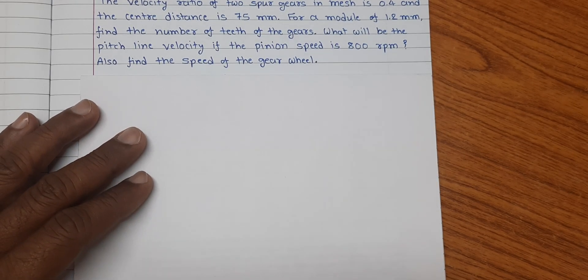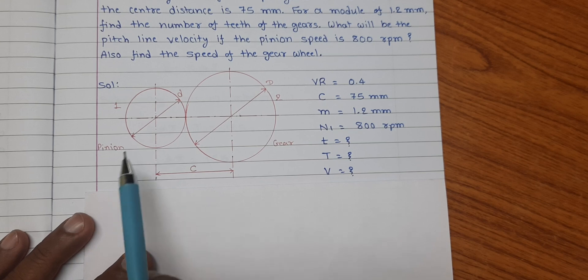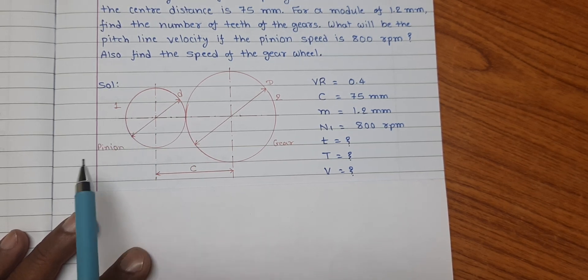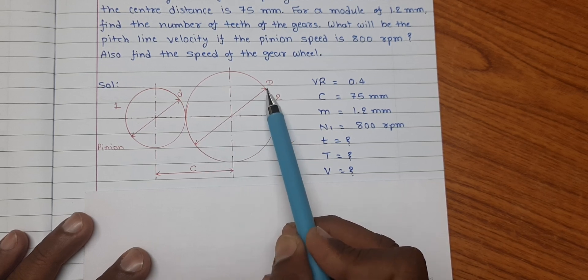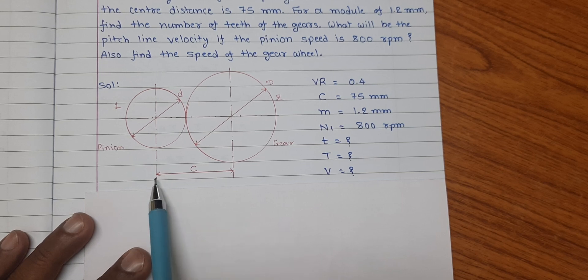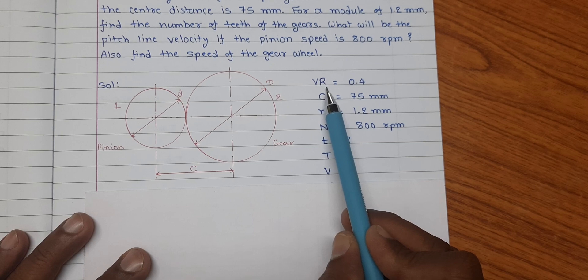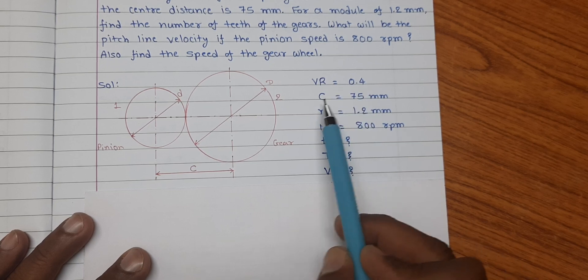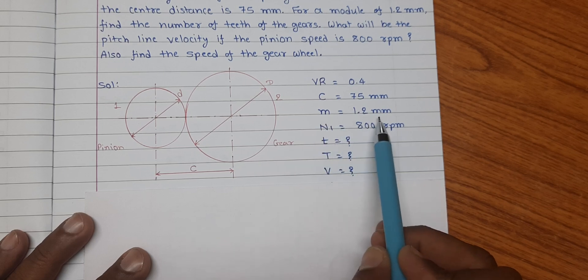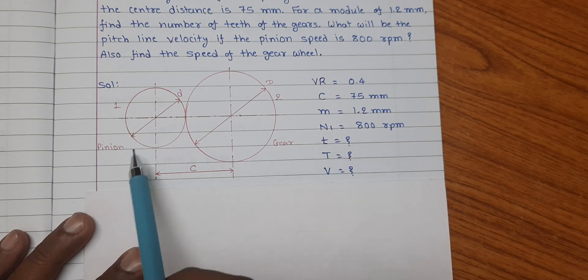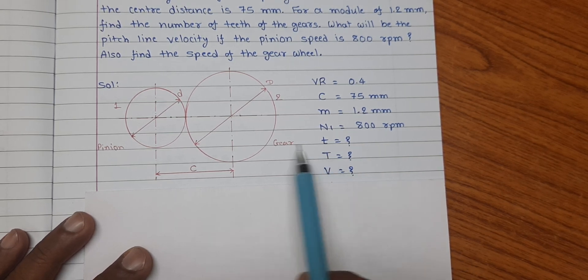Let us first note down the given information. Here we have a pair of spur gears: this is the pinion, denoted by 1, with pitch circle diameter small d; and this is the gear, denoted by 2, with diameter capital D. The center distance between them is C. Given: velocity ratio = 0.4, center distance C = 75 mm, module m = 1.2 mm, and speed of pinion n1 = 800 rpm.